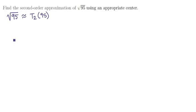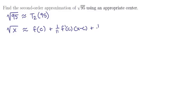It's reasonable to approximate the square root of x by a second order Taylor polynomial. This would be f of the center, plus one over one factorial times f prime of the center times x minus the center, plus one over two factorial times f double prime of the center times x minus the center squared.